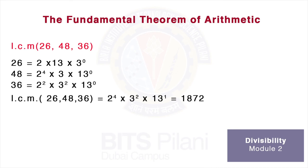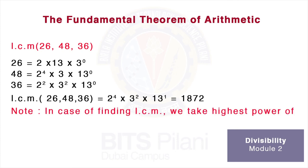2 has the largest power 4, so we write 2⁴. We multiply by 3, take the highest power of 3 which is 2, and multiply by 13, take the highest power of 13 which is 1. Multiply all three, we get the product as 1872. This is how LCM and GCD is found.